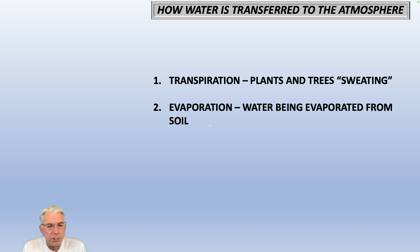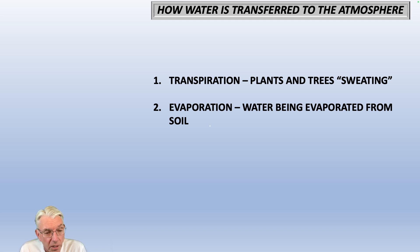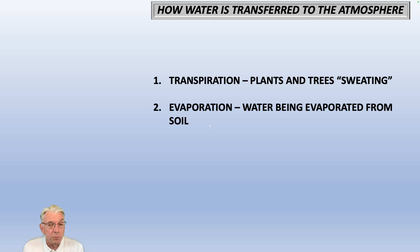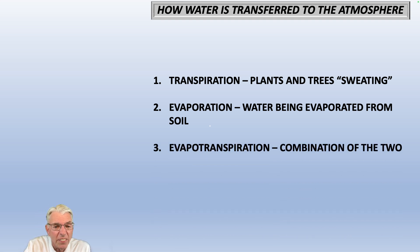Then we have evaporation, which is simply soil moisture being evaporated directly from the soil due to sunlight, and so that moisture gets evaporated into the air. Both of these processes actually cause some cooling. So evapotranspiration is a combination of transpiration and evaporation.